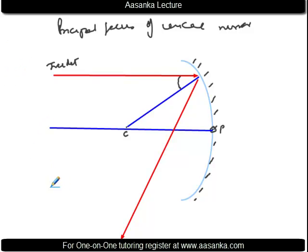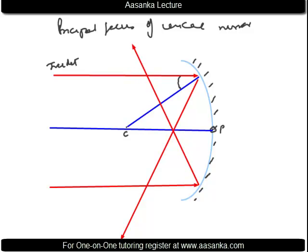Similarly, another incident ray from the other side reflects accordingly, and both reflected rays appear to meet at a point on the principal axis. Making the angle the same and drawing it out, the rays will converge. The point where these reflected rays meet on the principal axis is called the principal focus of the concave mirror.